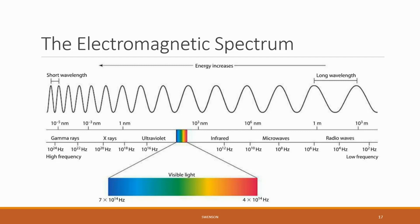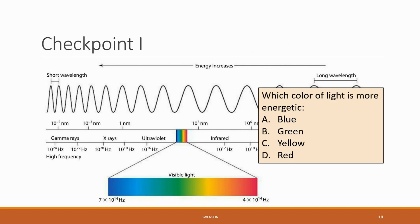The particular wavelength and frequency determines the type of light. The shorter the wavelength, the higher the frequency, and additionally the larger the energy. The shortest wavelengths and highest frequencies are gamma rays; the largest wavelengths and lowest frequencies are radio waves. Somewhat in the middle is the visible light spectrum, which is relevant to photosynthesis because this spectrum is what is harvested. Blue light has the shortest wavelength in this range and red light has the largest wavelength. Which color of light is more energetic: blue, green, yellow, or red?